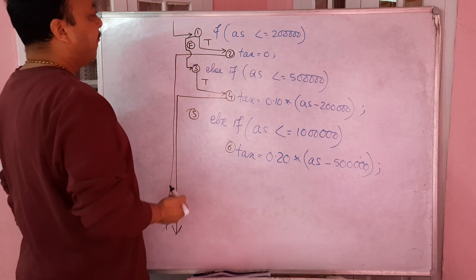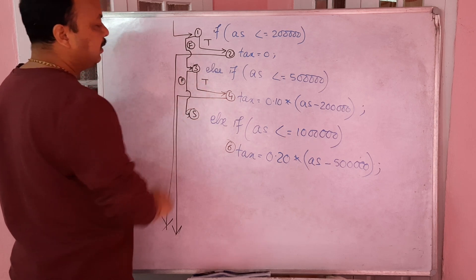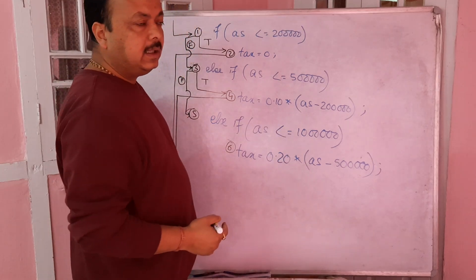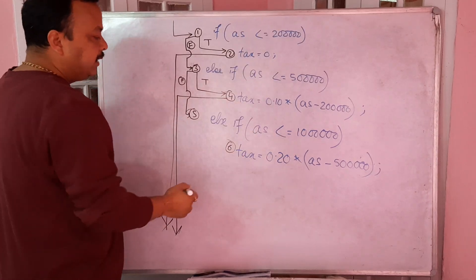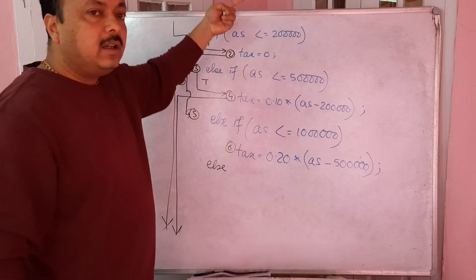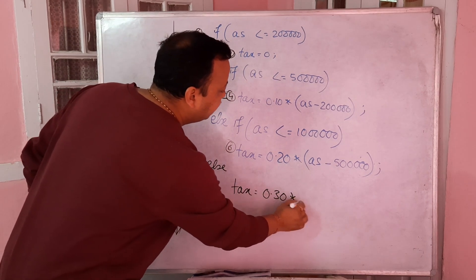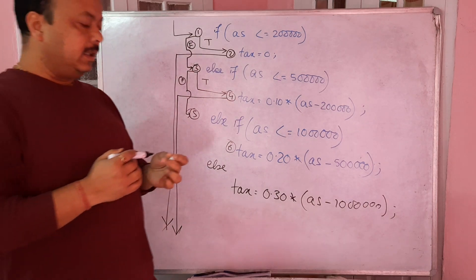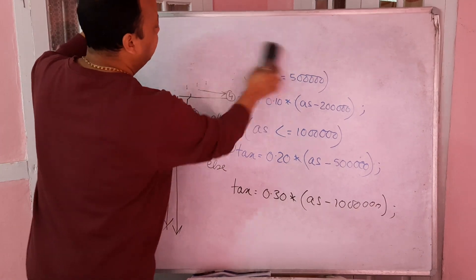If this condition is also not satisfied, you come to the last else if and check whether you qualify there. Sometimes, when none of the conditions are satisfied, you can have an else at the end - for example, thirty percent of the amount exceeding ten lakhs. That is the example for the if-else-if ladder. You can pause and rewind to watch it again.